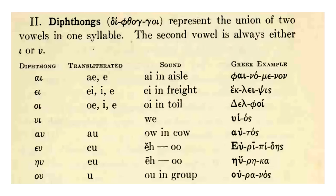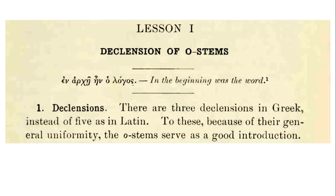Then we have the letter rho, which we remember through the word 'Qatar.' Then we have sigma, which we remember through 'spore.' Tau, we remember through 'toad.' Upsilon, we remember through a French u, as in 'déjà vu.' Then we have phi, which we remember through 'Philip.' Chi, which we remember through 'character.' Psi, which we remember through words like 'apse.' Then we have omega, the final letter — we have the alpha and the omega, the beginning and the end. This we know through the word 'ocean.'